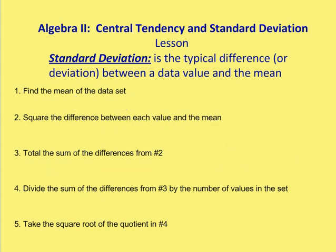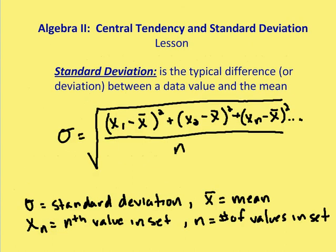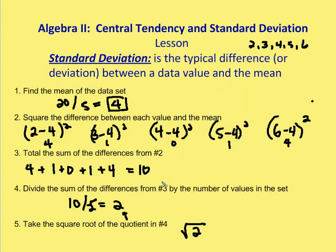The formula for standard deviation uses the symbol σ. You take the square root of the sum of each squared difference between a value (x₁, x₂, etc.) and the mean (x̄), divided by the number of values. It seems intimidating, but if you follow these steps you should be well off.